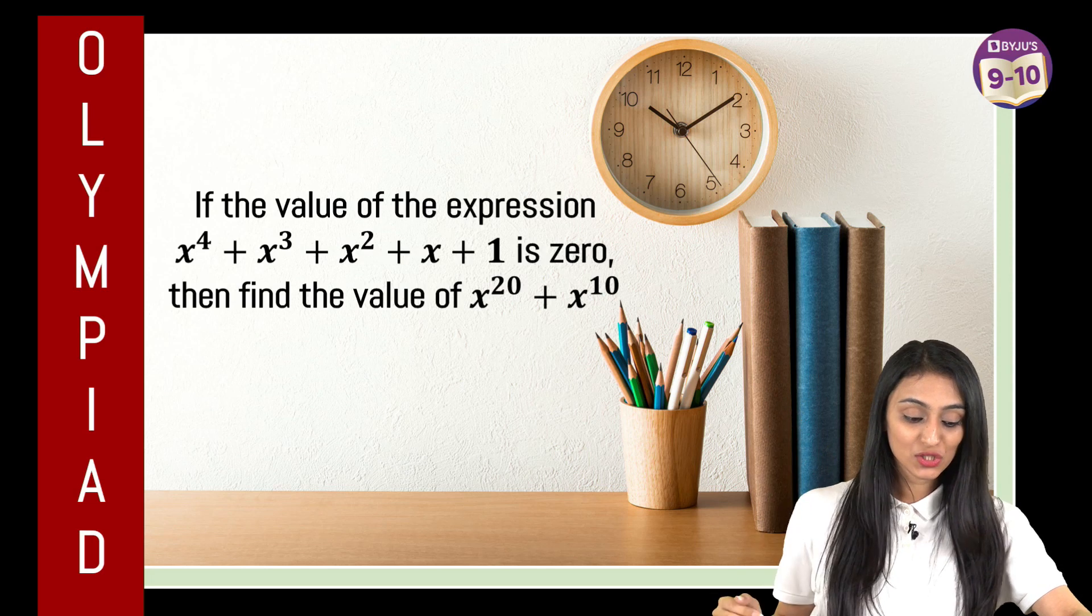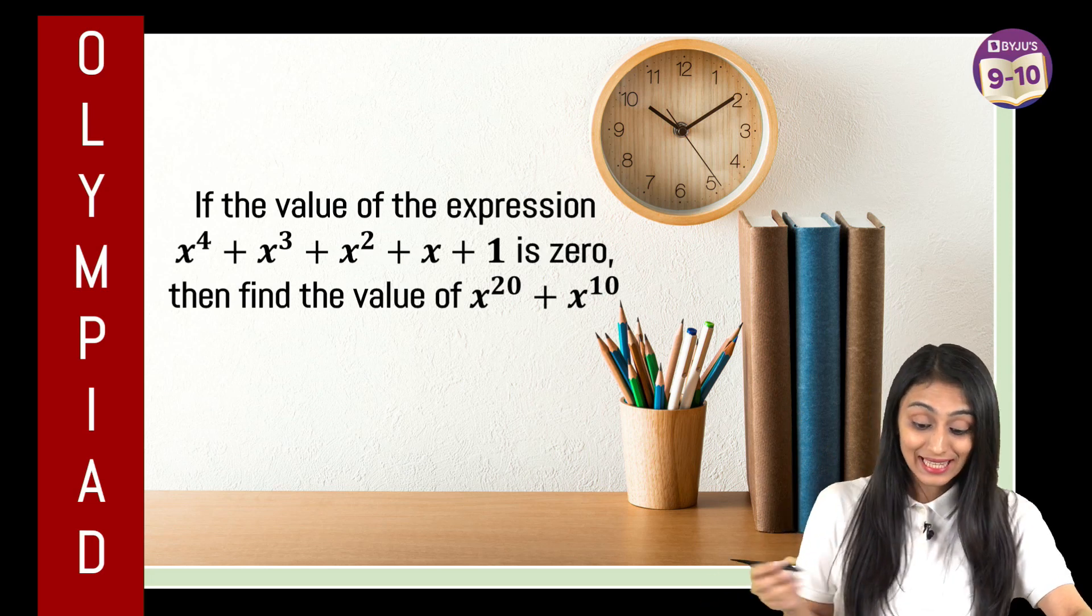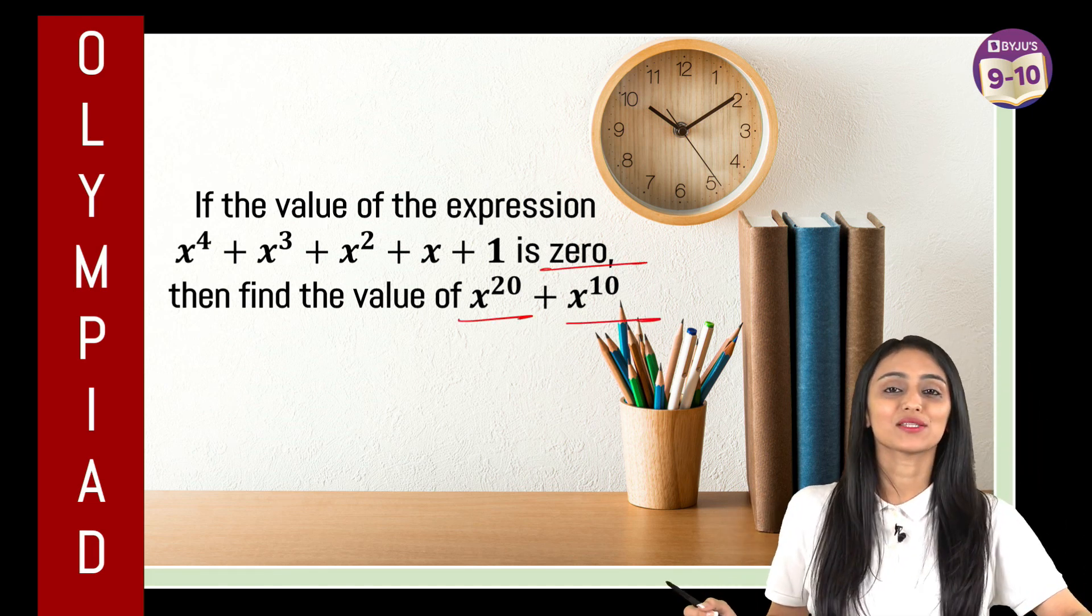So the question is, if the value of the expression x to the power 4 plus x cube plus x square plus x plus 1 is 0, this is already given, then find the value of x to the power 20 plus x to the power 10.